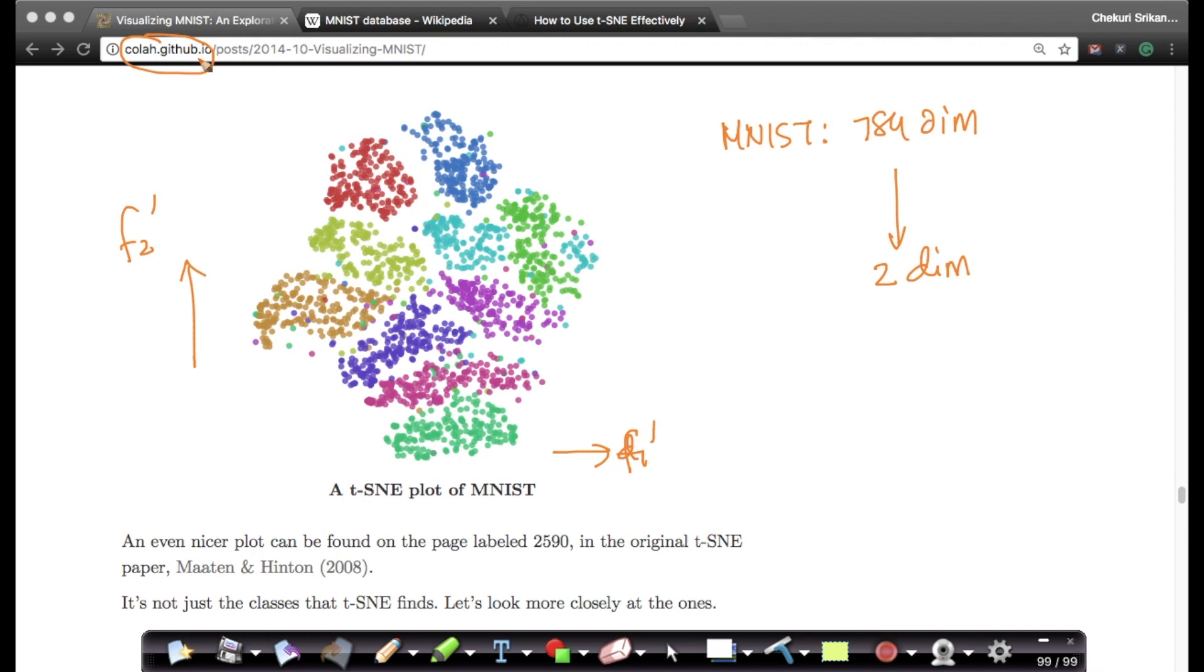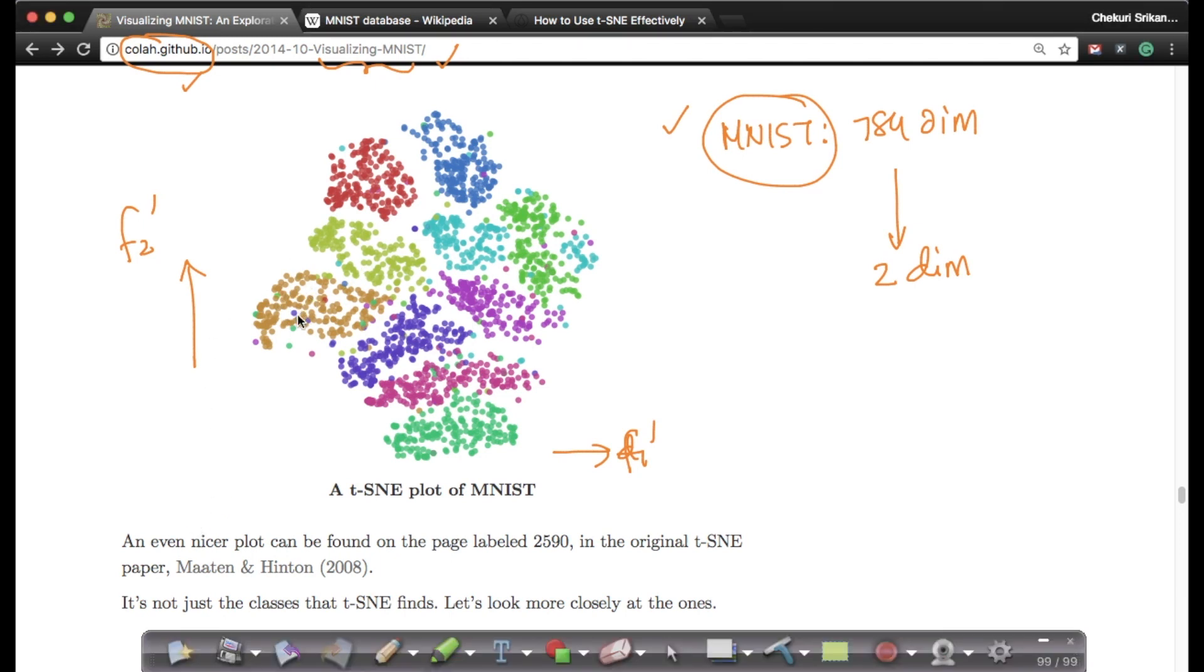distill.pub, colah.github.io. So again, I showed this to you, I showed this page to you earlier in this chapter. This is a visualizing MNIST webpage on Christopher Ola's blog. This is one of the best blogs that I've come across explaining t-SNE and PCA on MNIST data very beautifully. Now comes the interesting part.